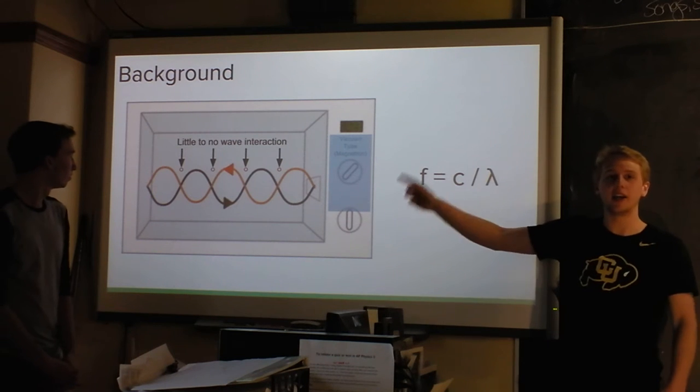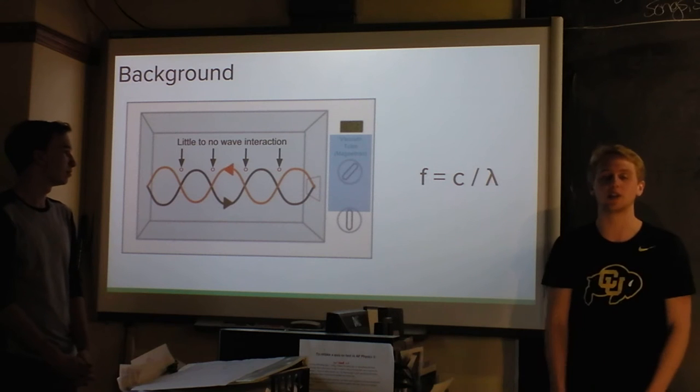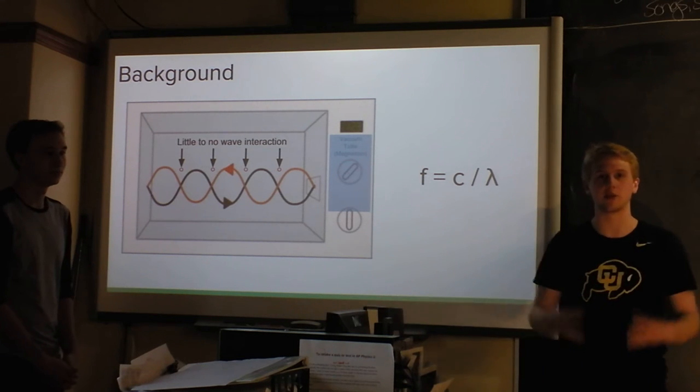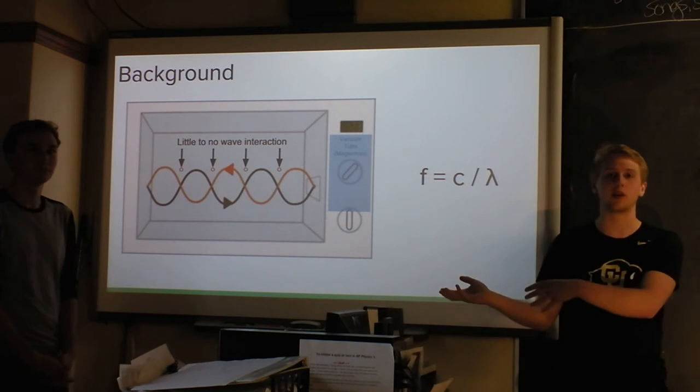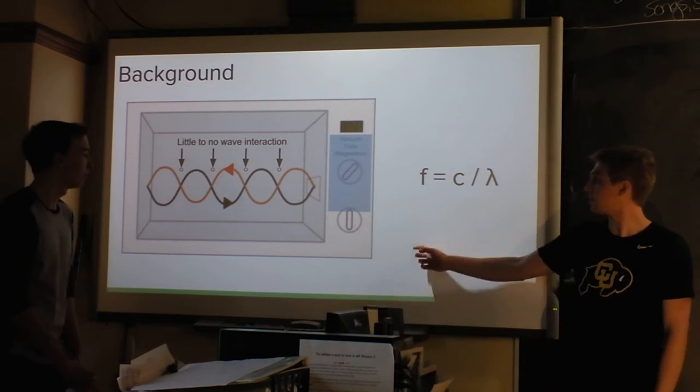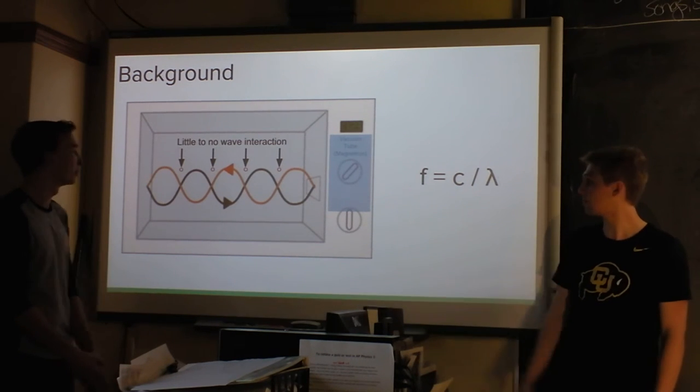And also it's important to note that the magnetron is on one side of the microwave, and it's shooting waves into the microwave one direction. It's not all around the box, so it's not being irradiated from all sides. It's coming from one direction and going through the box and bouncing back. And then we have that equation there, f = c / λ, which is just a useful thing that we're going to be using later in our experiment.